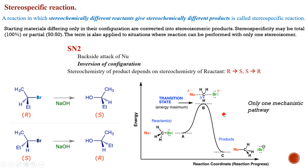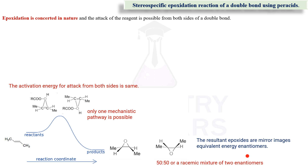There is only one mechanistic pathway available, so the stereochemistry of the product is decided by the stereochemistry of the reactant. A similar reaction is epoxidation, which is concerted in nature — one step. There are two possibilities of attack: one from the upper side and one from the lower side, considering the molecule as planar. If you look at the energy level, for both attacks it is the same.